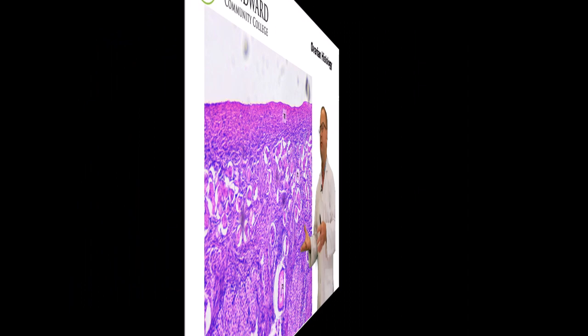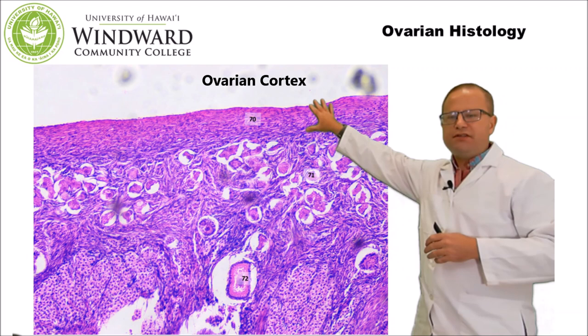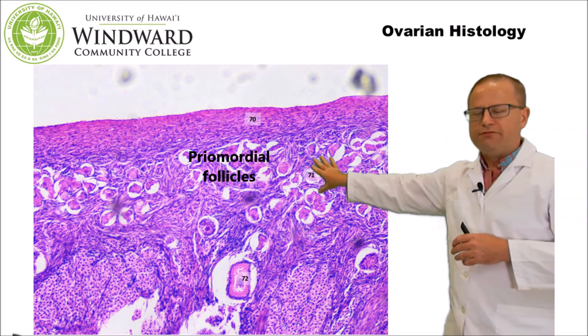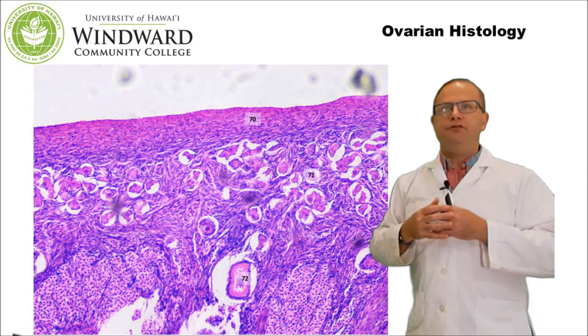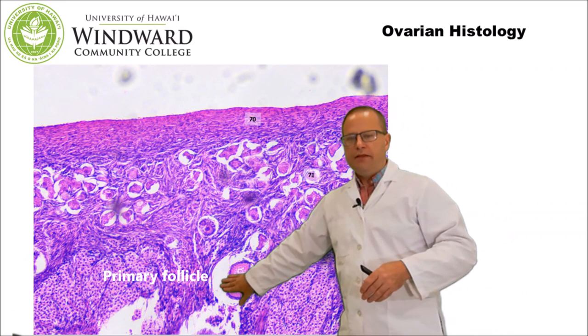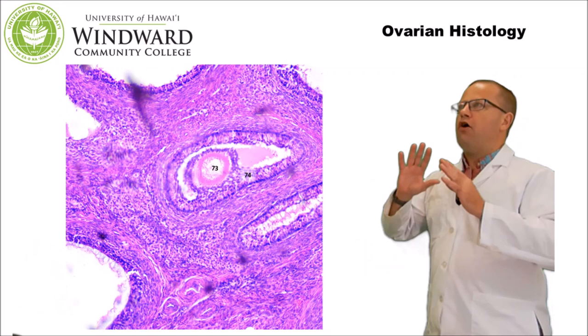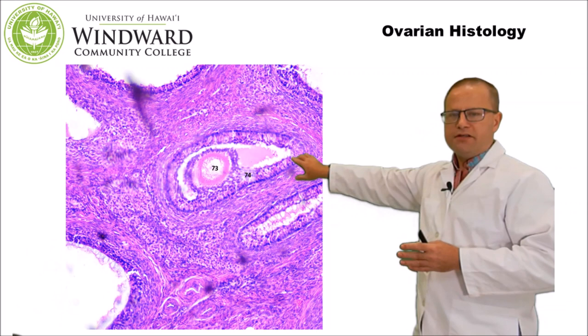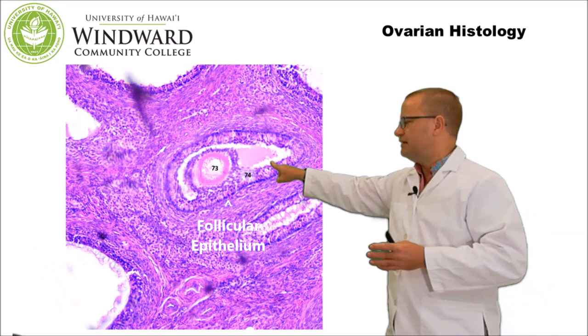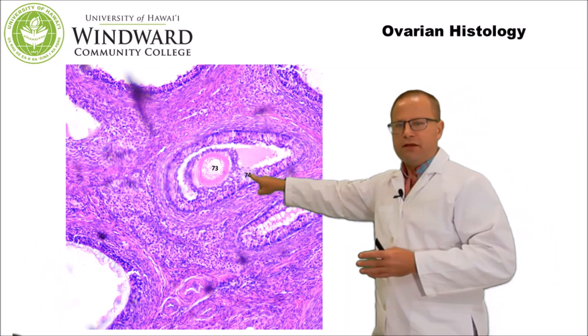Now let's look at histology of the ovary. This is the ovarian cortex, the outside of the ovary, containing many primordial follicles — the most immature follicles, without a discernible follicular epithelium. Under FSH, a few a month develop into primary follicles, which are slightly bigger with a discernible follicular epithelium. Primary follicles transition into secondary follicles — also called vesicular, antral, or graafian follicles — with a well-developed follicular epithelium secreting estrogen in response to FSH from the anterior pituitary, and a small fluid-filled antrum with the oocyte visible inside.